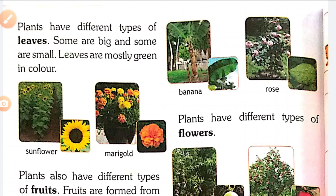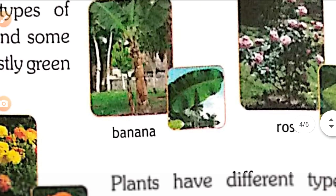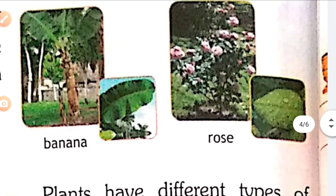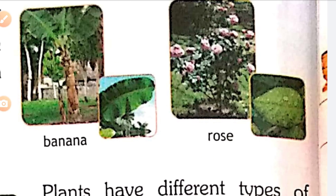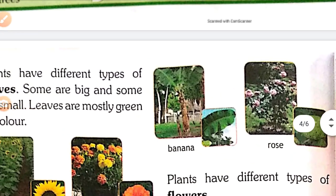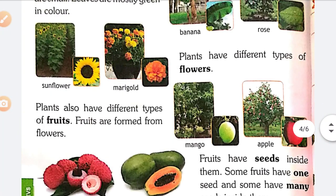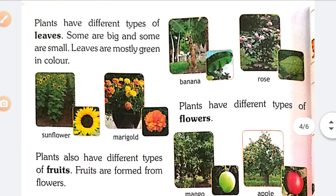Plants have different types of leaves. Some are big and some are small. Leaves are mostly green in color. Here you can see banana leaves — they are big. Rose leaves are smaller than banana leaves. There are many leaves you can observe around you. The leaf is the most important part of the plant.